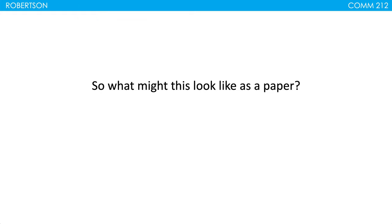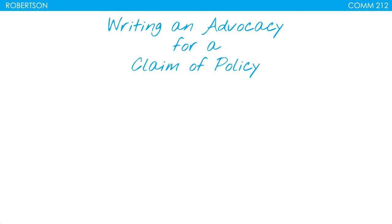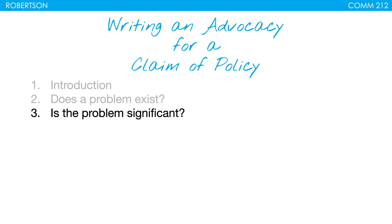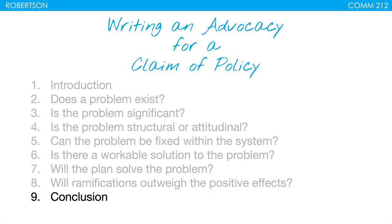Now, what might this look like as a paper? If we're writing this for a claim of policy, we need an introduction, then all the different parts, and finally some sort of conclusion. Most times you'd also have a cover page, making sure all source citations are in APA format. After the conclusion section on a separate page, you're also going to have a references page.